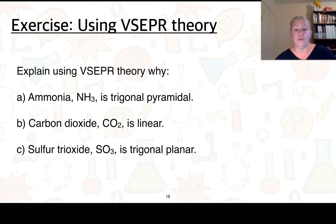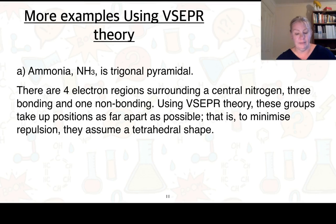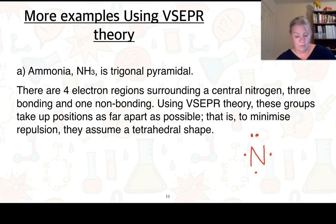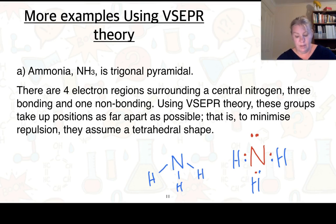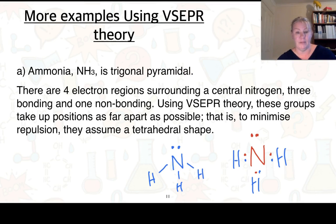Ammonia is trigonal pyramidal. Looking at ammonia, we have four electron regions surrounding a central nitrogen. Nitrogen has five valence electrons, giving one non-bonding region and three bonding regions. The three hydrogens are placed around the nitrogen, so you have nitrogen bonded to three hydrogens with one non-bonding pair. They assume a tetrahedral arrangement overall, but because one of those regions is a non-bonding pair, we classify the shape as trigonal pyramidal.